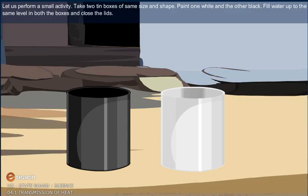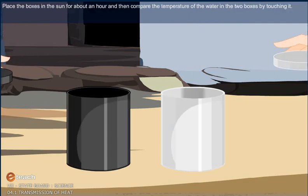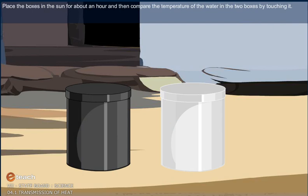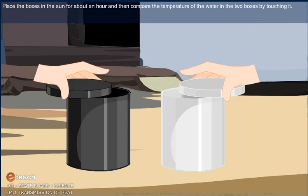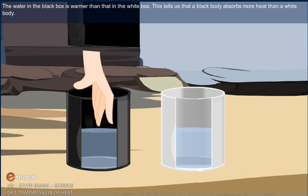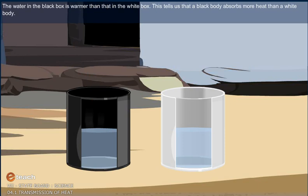Let us perform a small activity. Take two tin boxes of same size and shape. Paint one white and the other black. Fill water up to the same level in both the boxes and close the lids. Place the boxes in the sun for about an hour. And then compare the temperature of the water in the two boxes by touching it. The water in the black box is warmer than that in the white box. This tells us that a black body absorbs more heat than a white body.